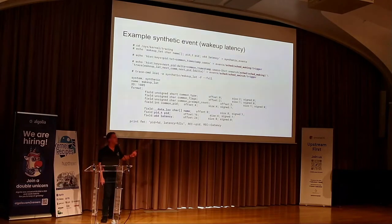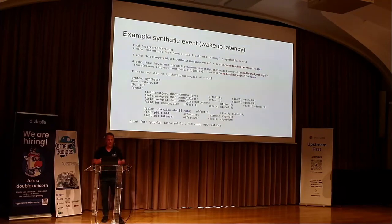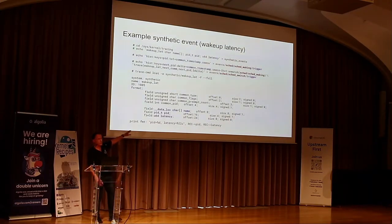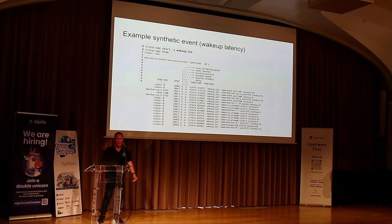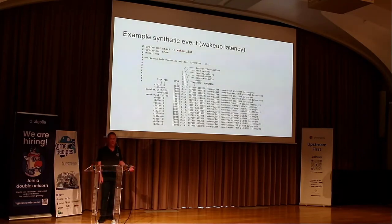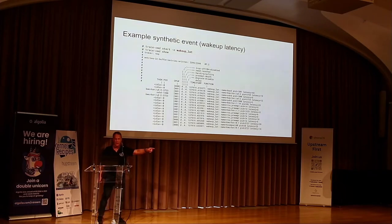Then I do a list of the event with full fields of wakeup_lat, and I see it's a dynamically allocated name, followed by the process ID, followed by the latency. I start the wakeup latency, look at the dump of the trace, and there are all the latencies and traces going on — I see the event names and wakeup latencies.